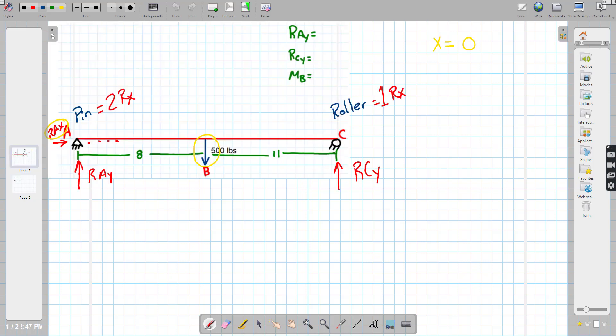So if we take a look here, our X we've already established. There's no opposing force, right? We do have a reaction force there because it's a pin. But there's nothing coming this direction. So it's going to be zero.